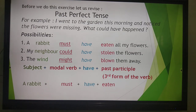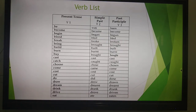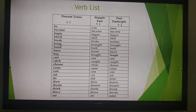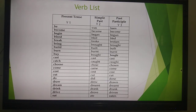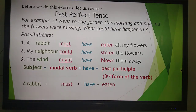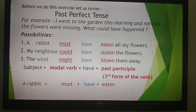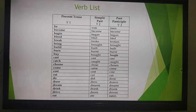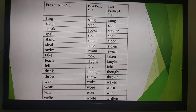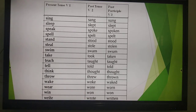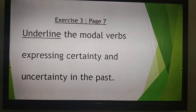The pattern is: subject (rabbit, neighbour, or the wind), then the modal verb (must, could, might), then 'have', then the past participle — the third form of the verb: eaten, stolen, blown. In your verb lists, the first form is the base verb, the second form is simple past, but in the past perfect we use the past participle. For example: eat, ate, eaten; steal, stole, stolen; blow, blew, blown. Please go through these verb lists — there are three or four. We need to know the present form, the past, and the past participle. Please write them in your notebook as well.